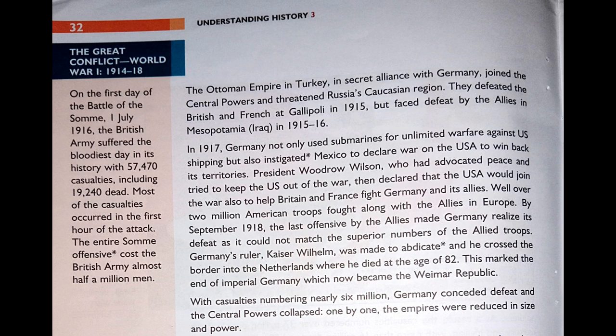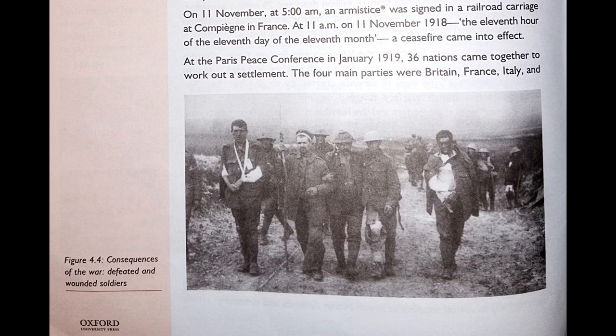This marked the end of imperial Germany, which now became the Weimar Republic. With casualties numbering nearly 6 million, Germany conceded defeat — conceded meaning to admit or agree that something is true after first denying it. The Central Powers collapsed one by one, and the empires were reduced in size and power.